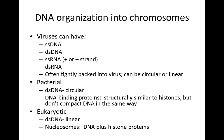In eukaryotes, the DNA is going to be double-stranded and it is going to be linear chromosomes. We're also going to talk about nucleosomes — these are DNA plus proteins. These proteins are called histones, and this is really important for packaging the DNA so that it actually fits within a cell.